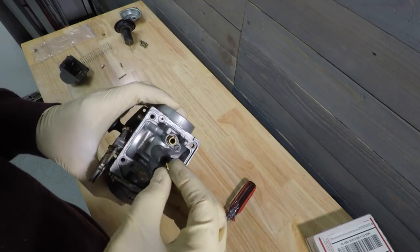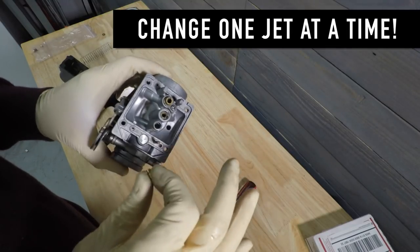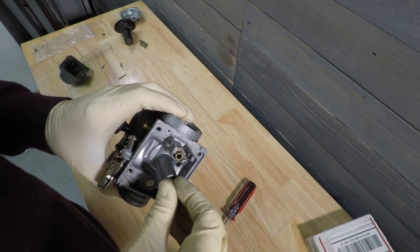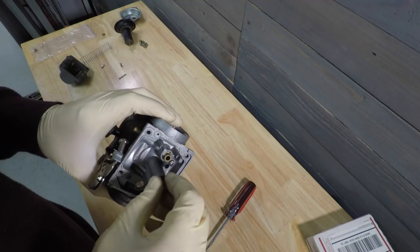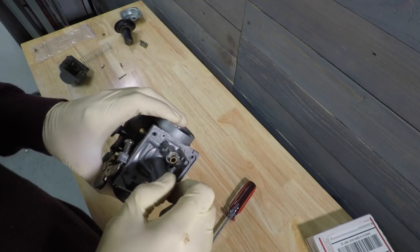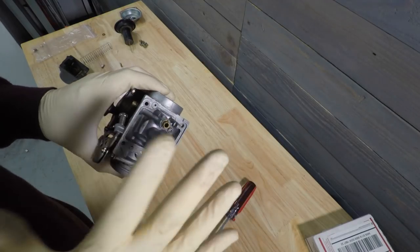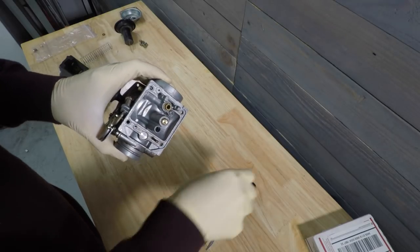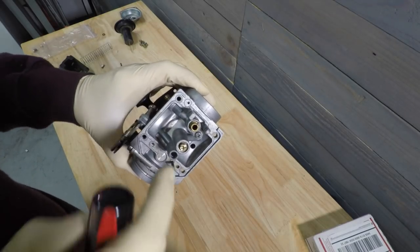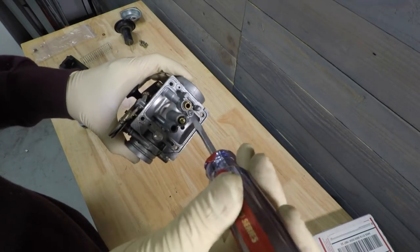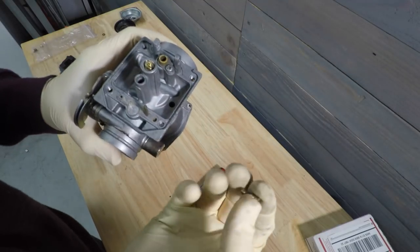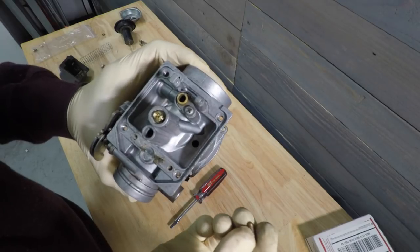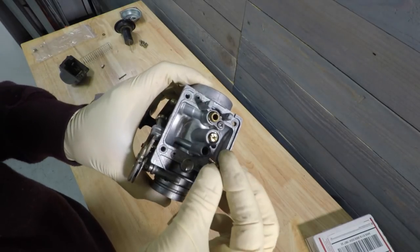I always like to make only one jet change at a time and try to work on it and make it run in that part of the throttle as well as it can, and then make other changes once we feel like we've got that one just right. Then we move to like the idle jet or the needle jet or whatever we want to do. So this is where our main jet goes, we're just going to screw that in there. We're going to keep our original idle jet at this point. It goes right in here.